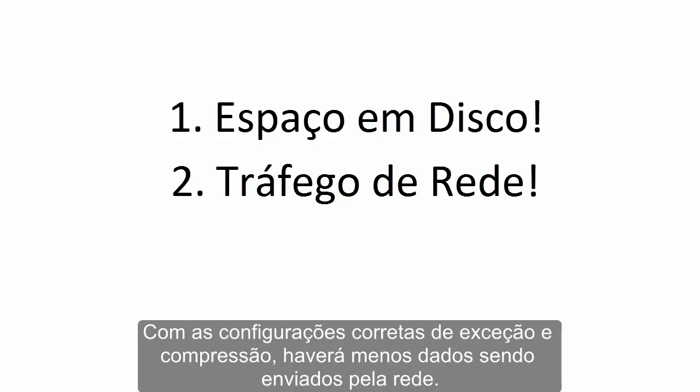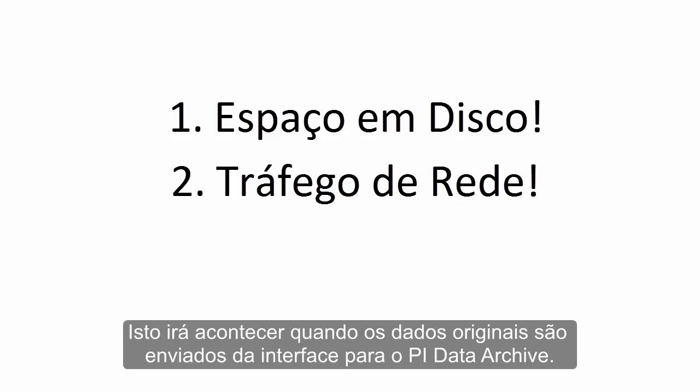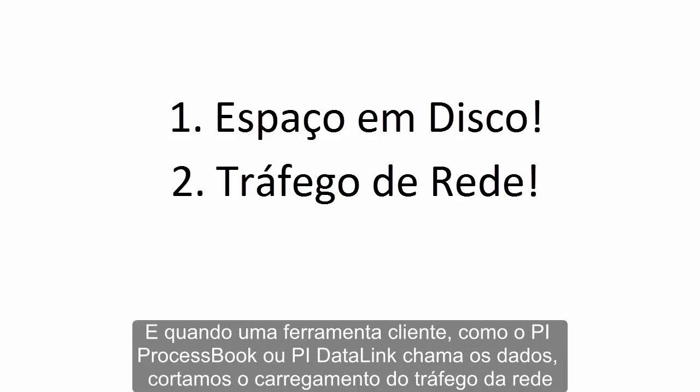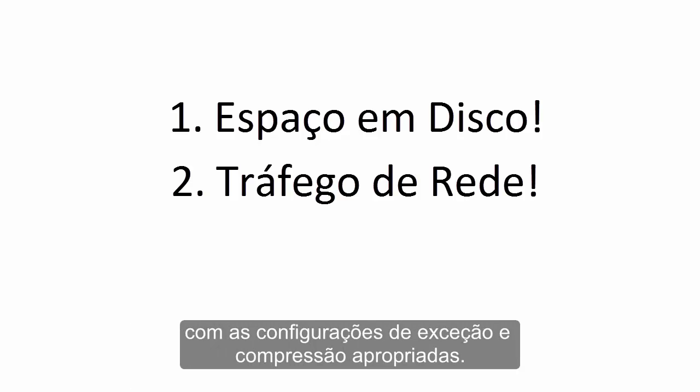Next is network traffic. With properly tuned exception and compression settings, there will be less data sent over the network. This will happen when the original data is sent from the PI Interface to the PI Data Archive, and when clients such as PI Process Book or PI Data Link call the data — we can significantly cut down the network traffic load with properly tuned compression and exception settings.